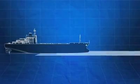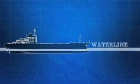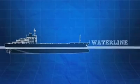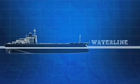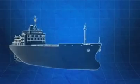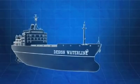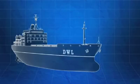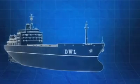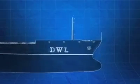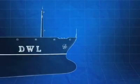The waterline is the intersection of the surface of the water a ship is floating in with the sides of the ship's hull. When a ship is designed, the naval architect determines the design waterline, or DWL, which represents the waterline of a ship under full load or maximum draft conditions on an even keel.